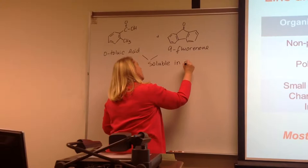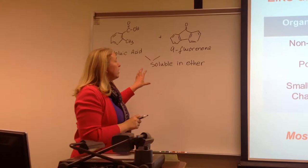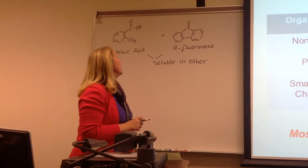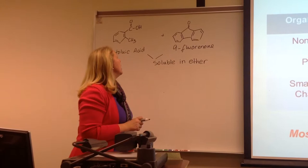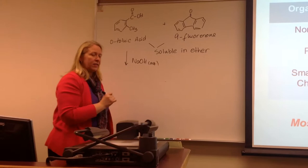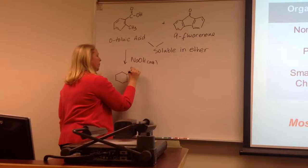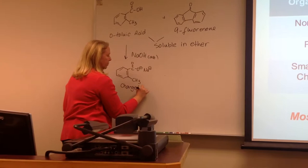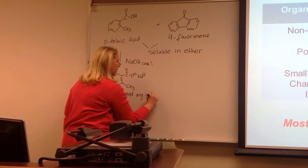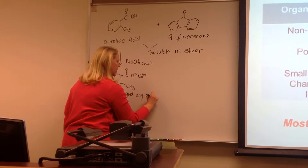You're going to dissolve your mixture in ether. Now we need to manipulate one of them to make it more soluble in an aqueous environment. Since this is an acid, we can do a straightforward acid-base extraction. We're going to take sodium hydroxide and deprotonate that acidic proton, basically forming a salt. Now we have a charged organic species — a carboxylate salt — and this is going to be soluble in an aqueous environment.